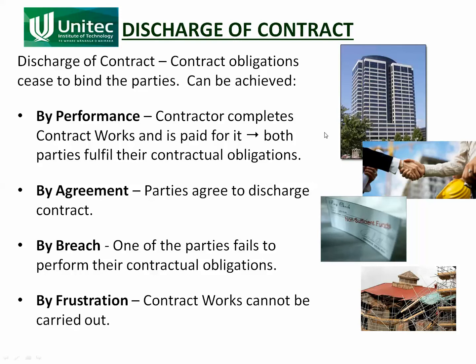However, things can go wrong and there are other ways that a contract can end up being finished without actually producing the contract works it was supposed to produce. The first alternative is by agreement — both parties agree to discharge the contract, and once both parties have agreed, the contract is finished.